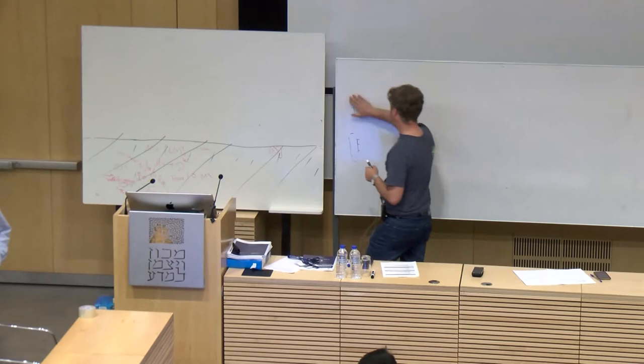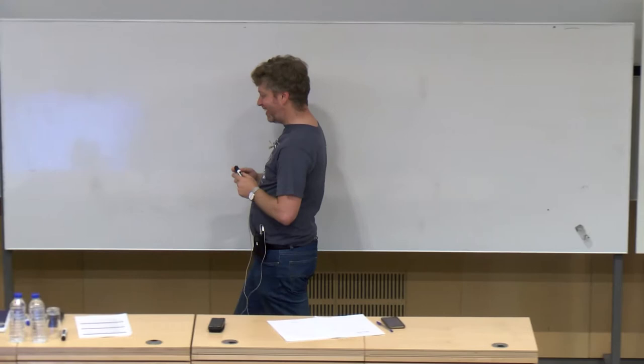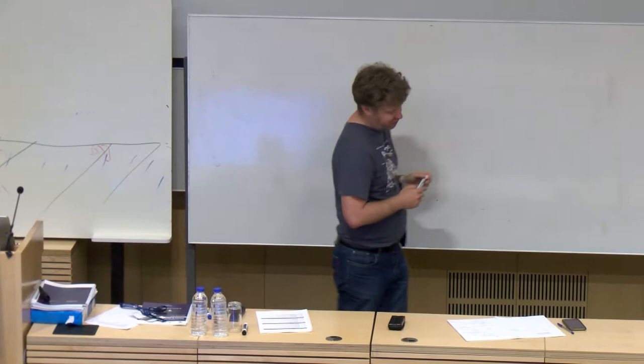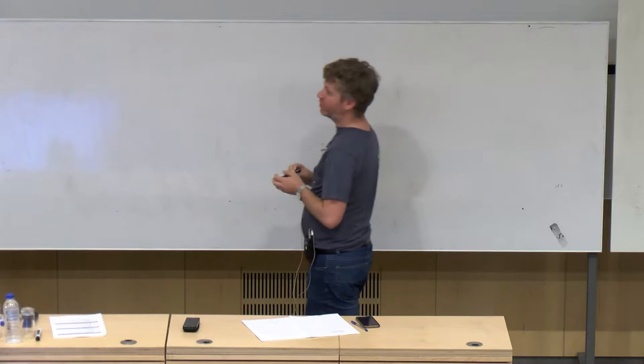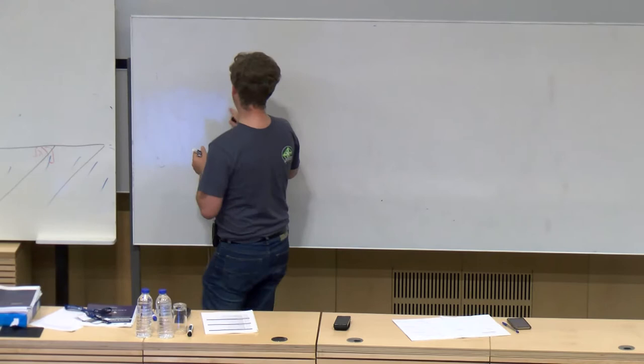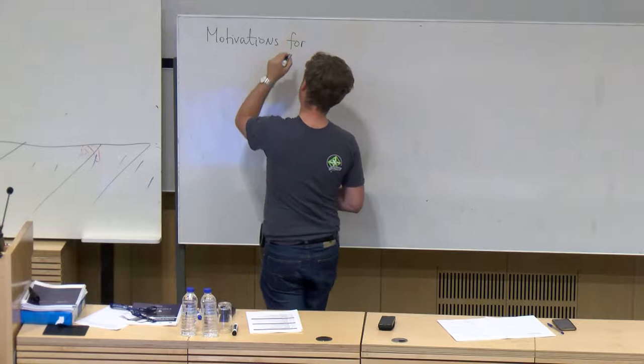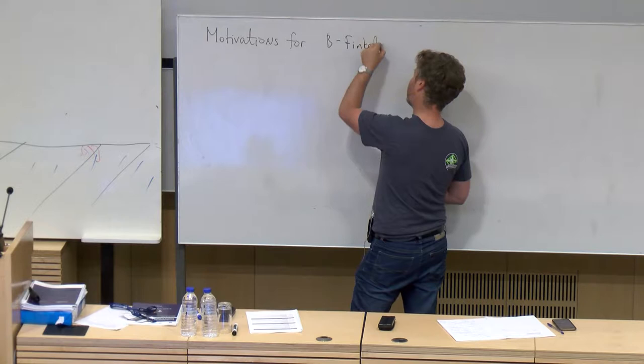I'm very pleased to speak at this conference. Unfortunately Joseph is not here. I decided to slightly change the structure of the talks. I was originally planning to talk about some series of work of myself with Finkelberg and Nakajima, but most of the time I'm going to talk about motivations for joint works with Finkelberg and Nakajima about Coulomb branches.